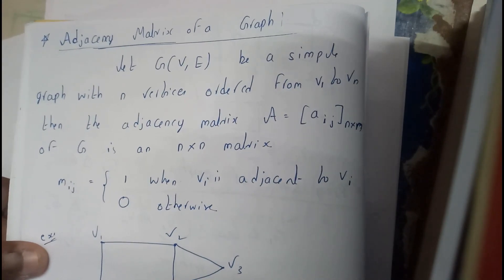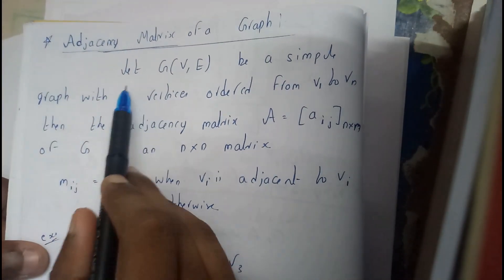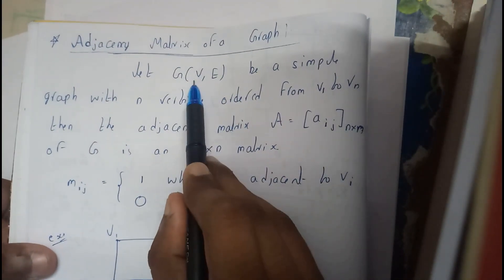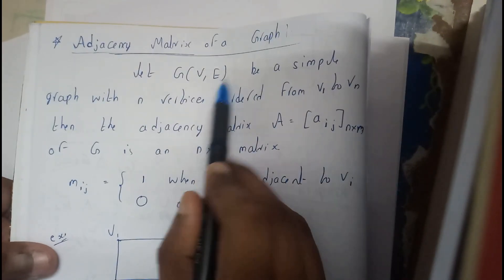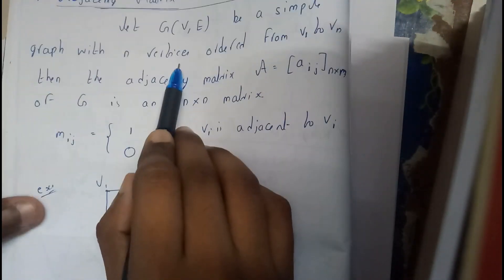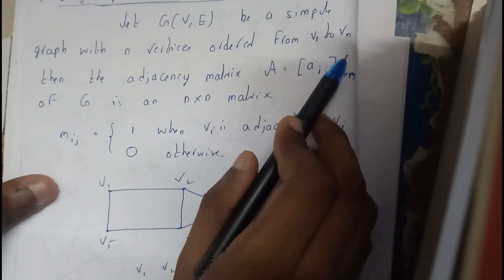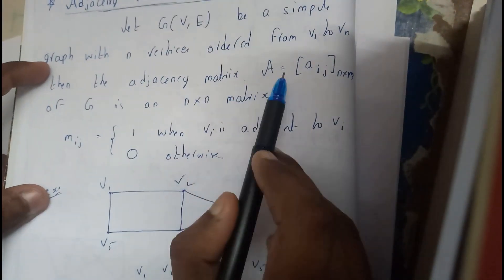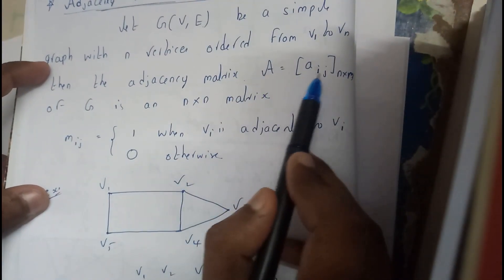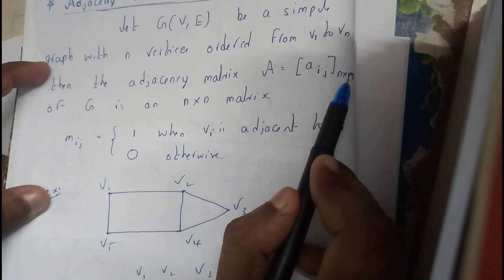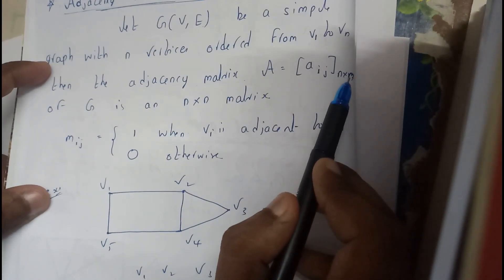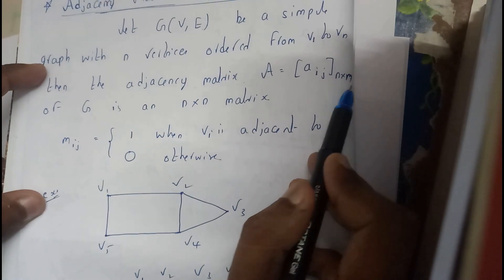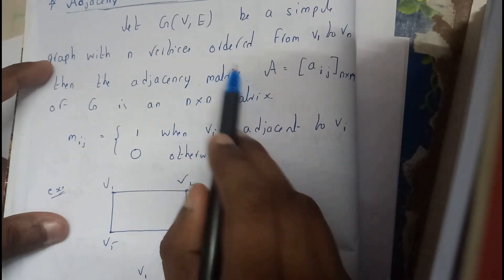Let's go through it once. Let us assume a graph G has vertices and edges. Let it be a simple graph or a normal graph with n vertices of order v1 to vn. Then the adjacency matrix A, a of i comma j will be the elements, n into n will be the matrix size. Mostly it will be n into n as n be the number of vertices.